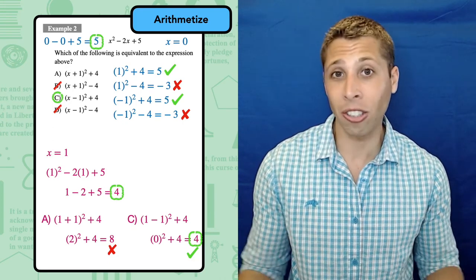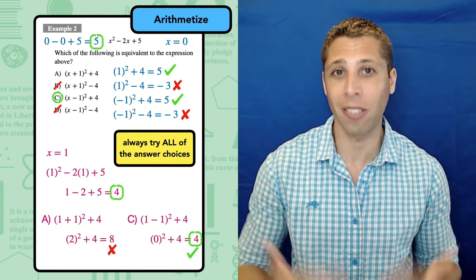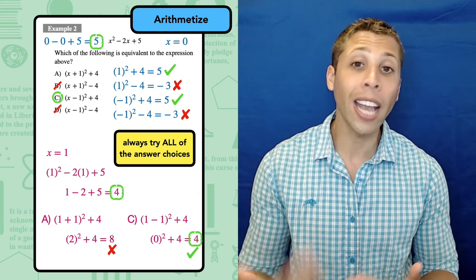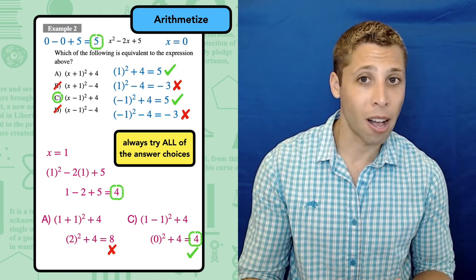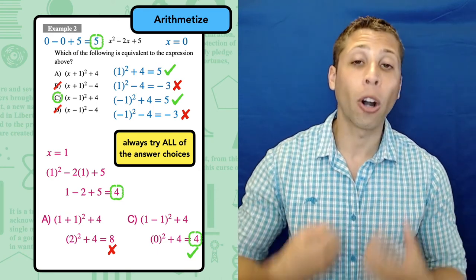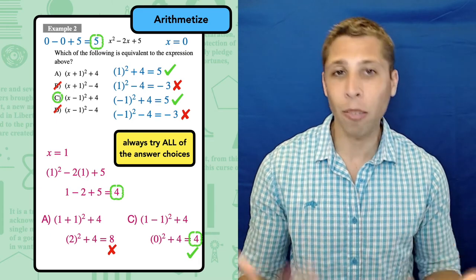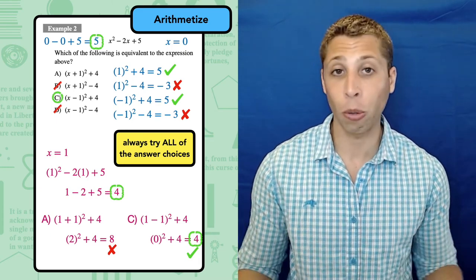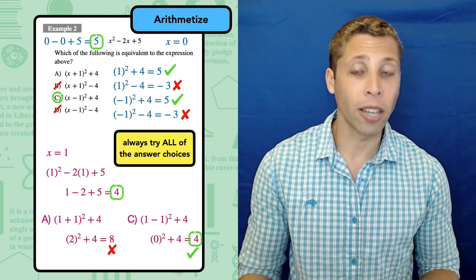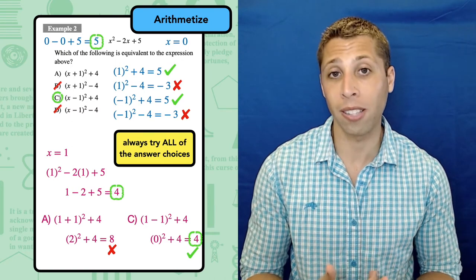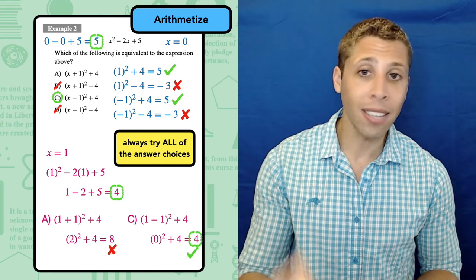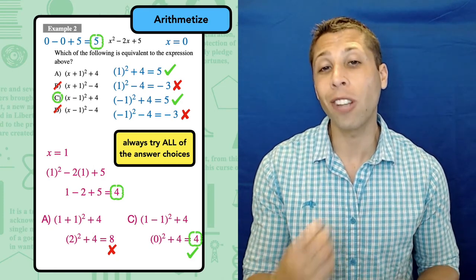The solution is actually just to check every single answer choice every single time you arithmetize. With guess and check, we don't need to check all of the answers because we're getting our numbers from the choices themselves. So we know it's possible that only one is correct. When we arithmetize by making up our own numbers, there's a chance that we get unlucky and pick a number that works for multiple choices. So just be thorough and check every choice every time. In the long run, arithmetizing will save you more time and more points, so it's worth it to be thorough. And as you practice, arithmetizing will feel less tedious and you'll get good at knowing which numbers to pick.